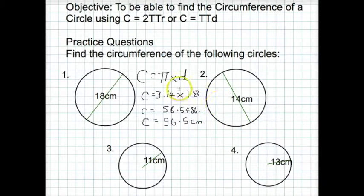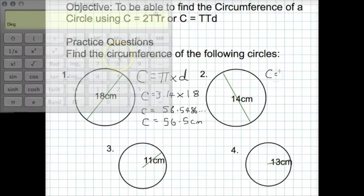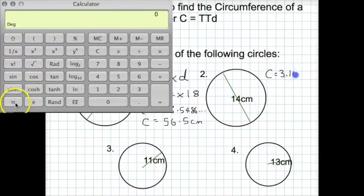Question 2. Same thing this time, only we've got a diameter of 14. So we're going to type in circumference equals, press our π button, and times that by 14. This time that's going to give us an answer of 43.98.